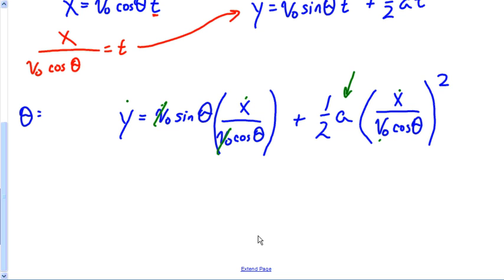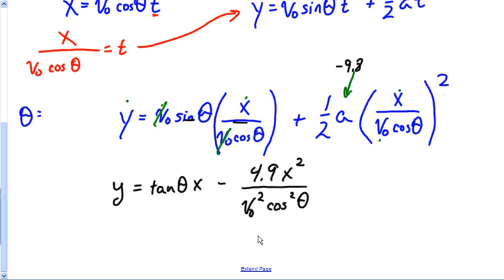This becomes Y equals sine theta over cosine theta, so this becomes tangent theta X. And then this becomes negative 4.9 X squared over V0 squared cosine squared theta.